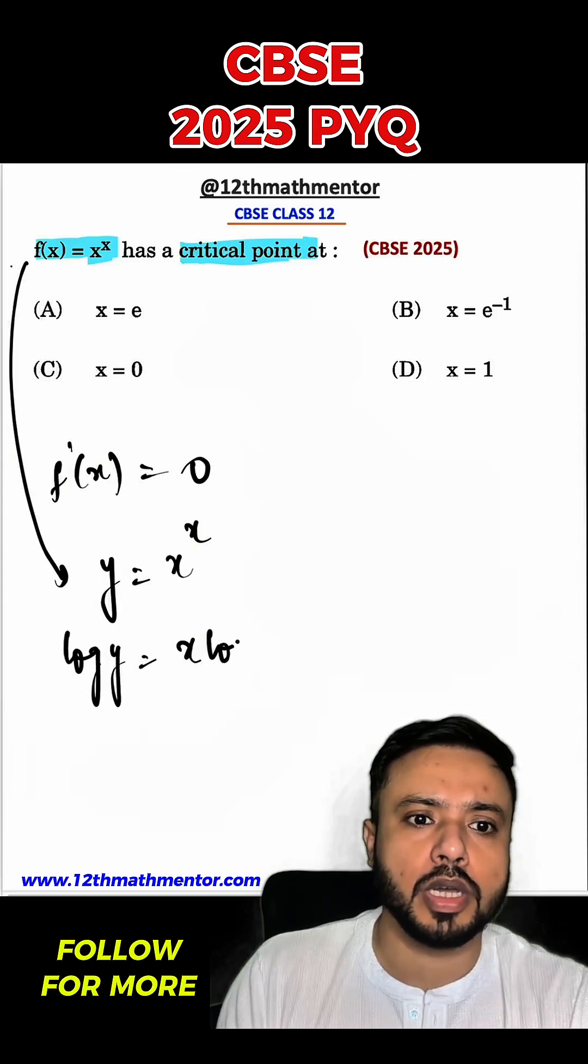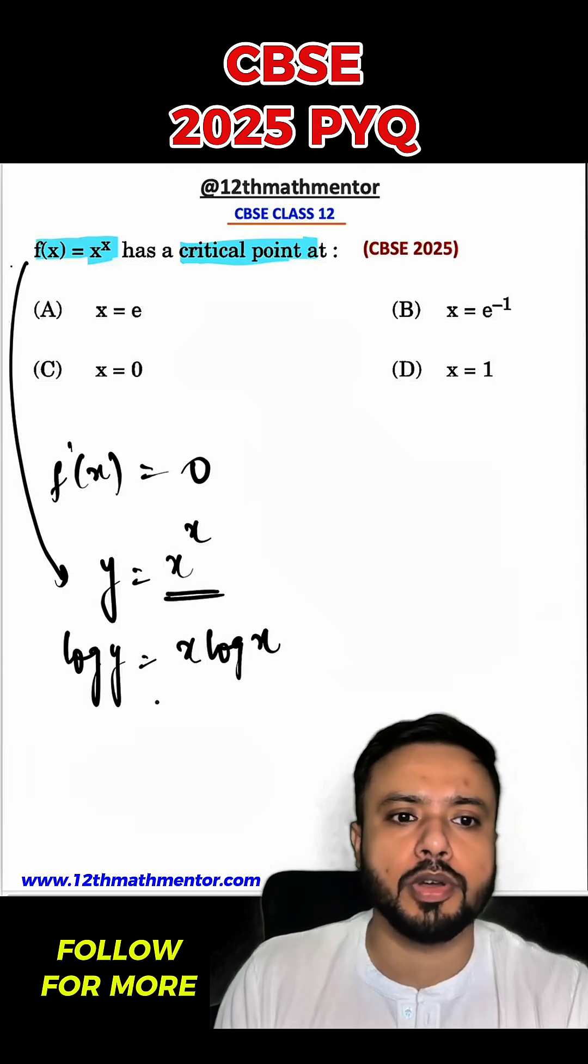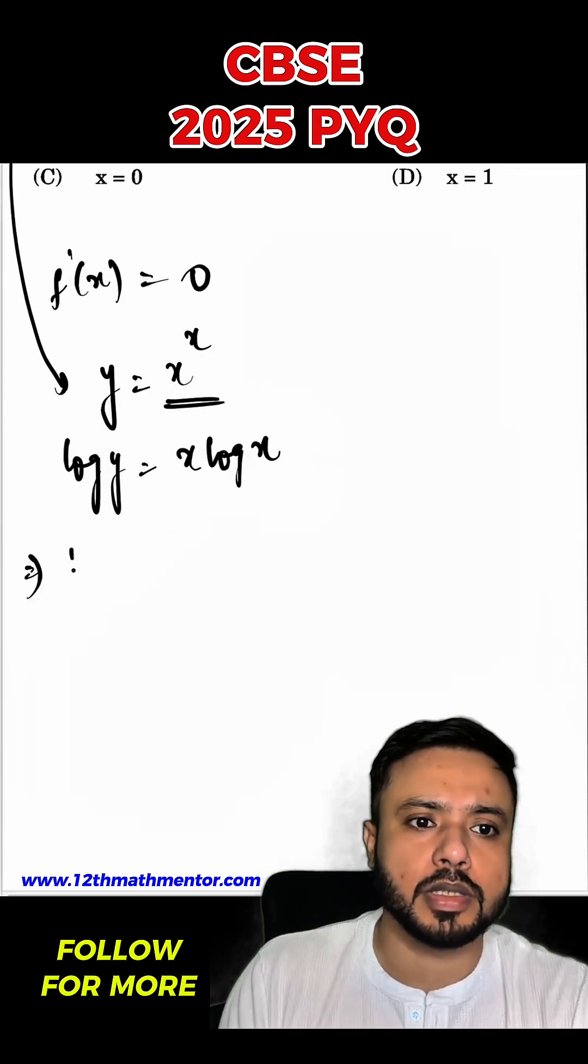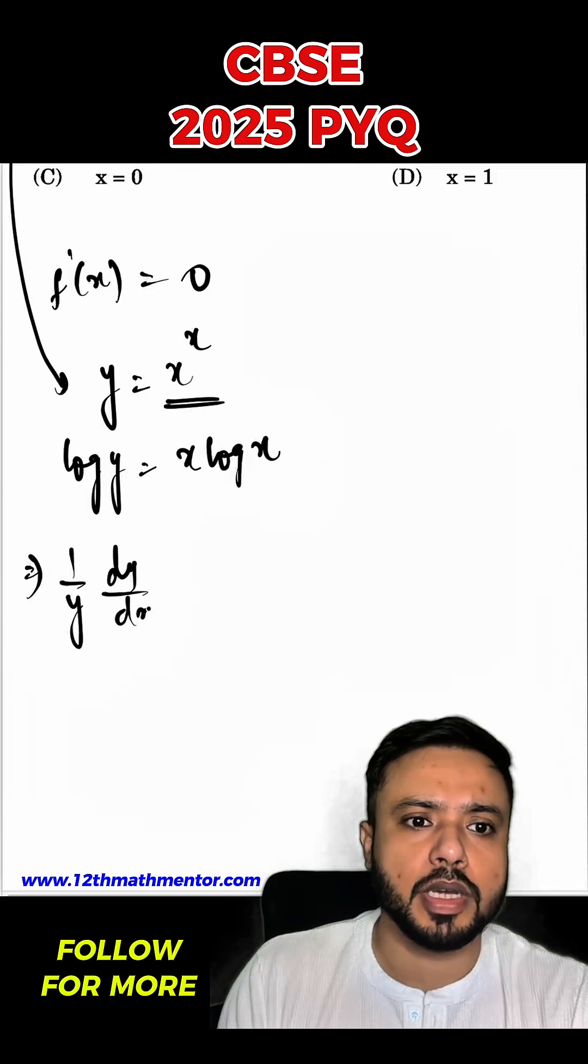Log y will be equal to x log x, so basically I have used logarithmic property over here. And now I will differentiate both sides with respect to x. So 1 upon y dy/dx will be equal to x into 1 upon x plus log x.